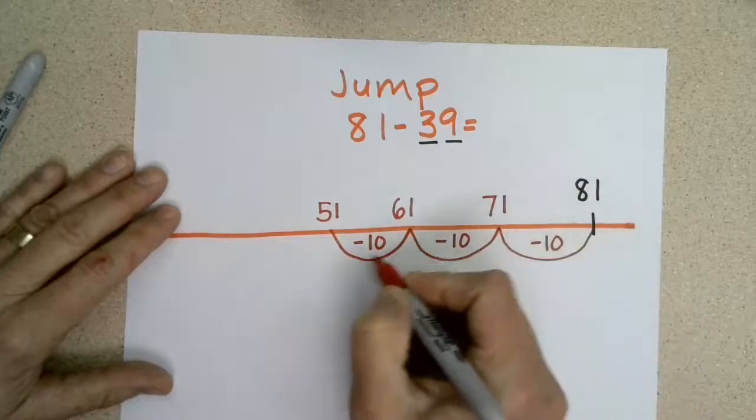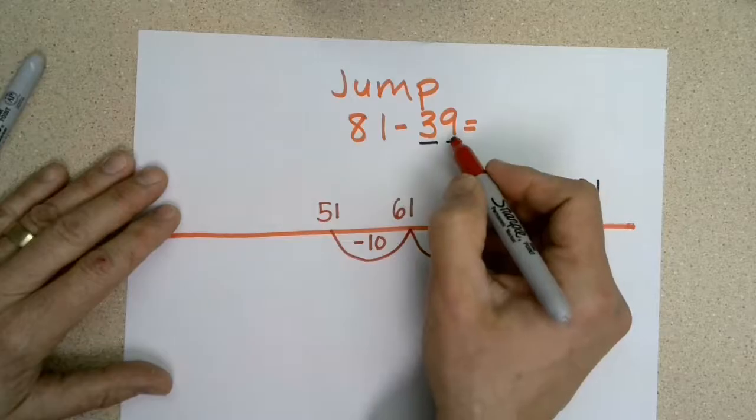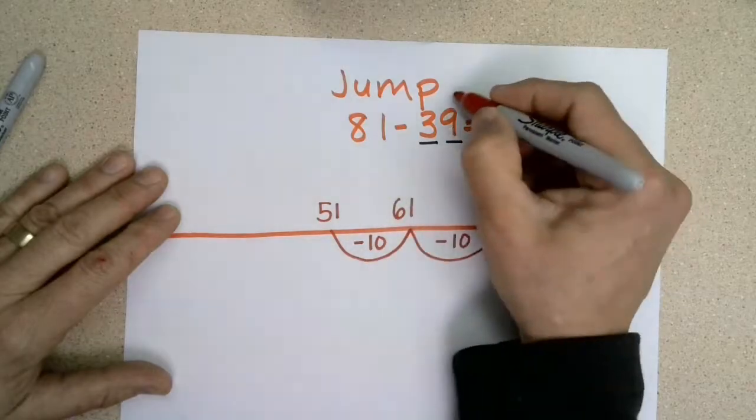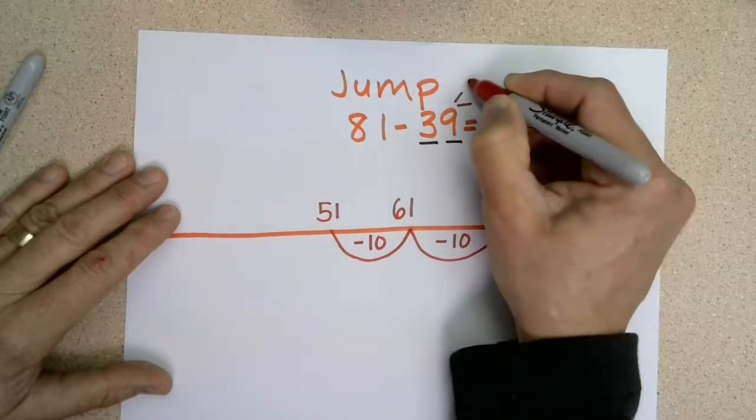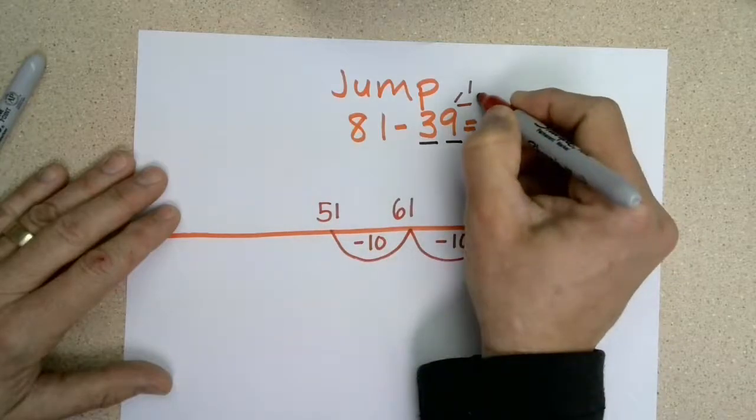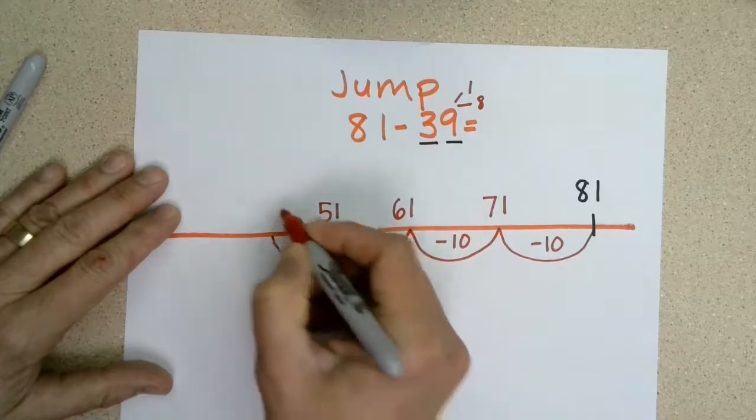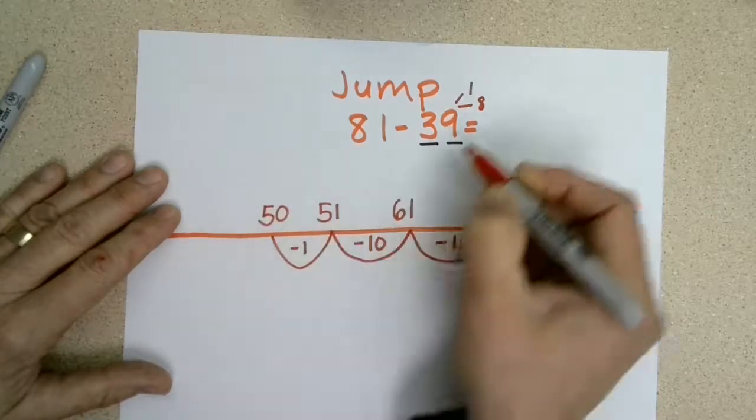I need to take away nine ones, but I only have one here. So I'm going to break nine up into two smaller parts: one, because that'll be easy to take away, and then eight, because one plus eight equals nine. I'm going to go back one to make it 50.